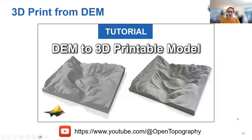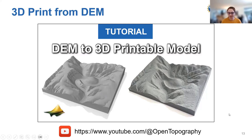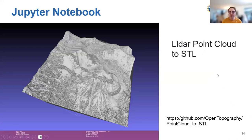On our YouTube and on a full page on our website, we have a step-by-step tutorial for how to use QGIS and this plugin, plus tips and tricks for creating a 3D printable model. It's recommended not to use the very newest version of QGIS but rather the most recent stable version. We also have a Jupyter Notebook called 'LiDAR Point Cloud to STL' that goes through a different method of converting a LiDAR point cloud into an STL file for use in virtual environments. The STL is the main file type used for 3D printing.